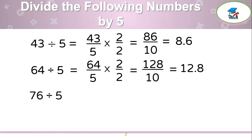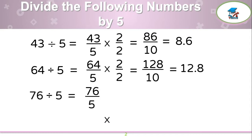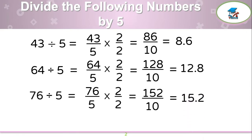Let us take one more example: 76 by 5. Write 76 over 5, which should be multiplied by 2 over 2. 76 times 2 is 152, and 5 times 2 is 10, and your final answer is 15.2.